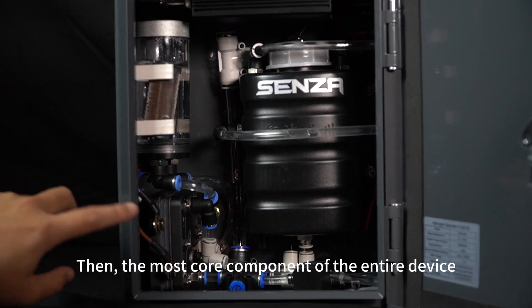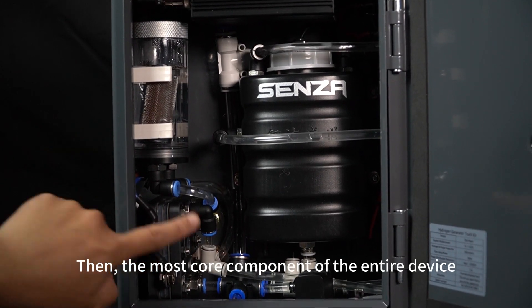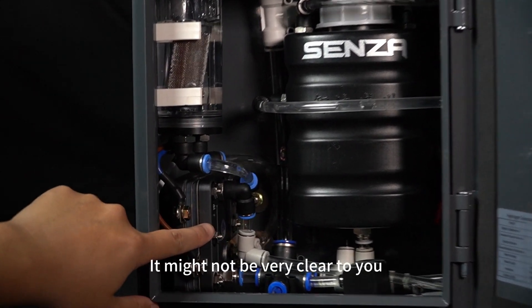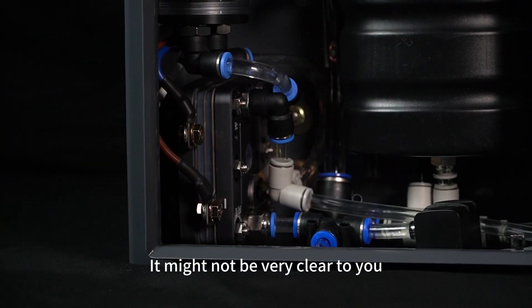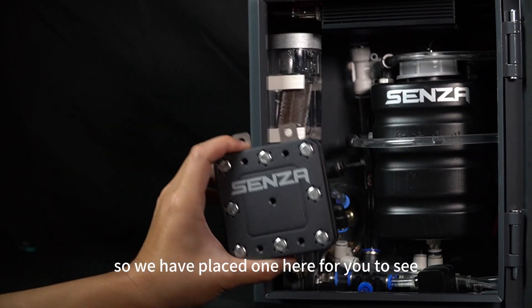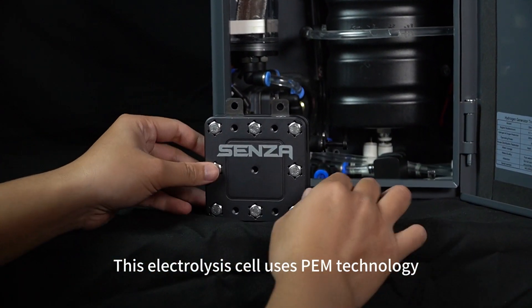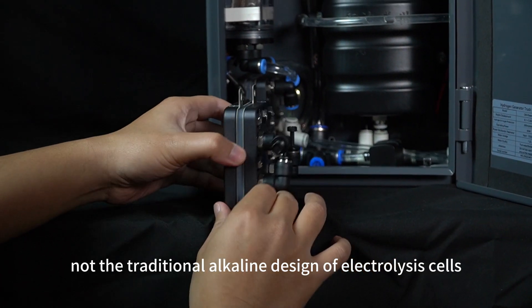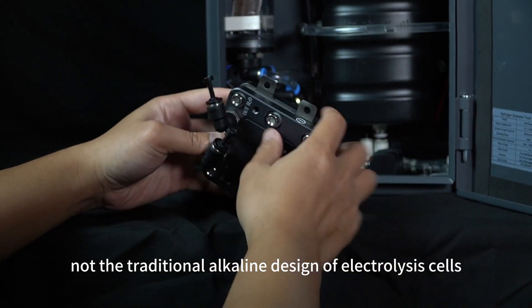The most core component of the entire device is this PEM hydrogen generator. It might not be very clear to you, so we have placed one here for you to see. This electrolysis cell uses PEM technology, not the traditional alkaline design.